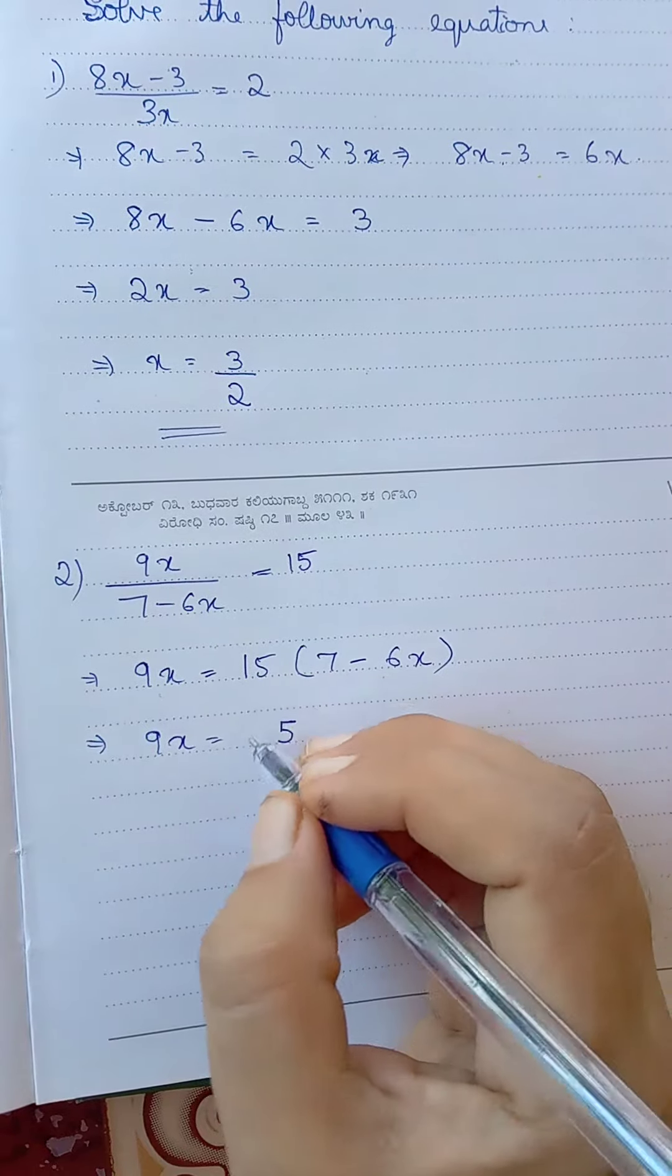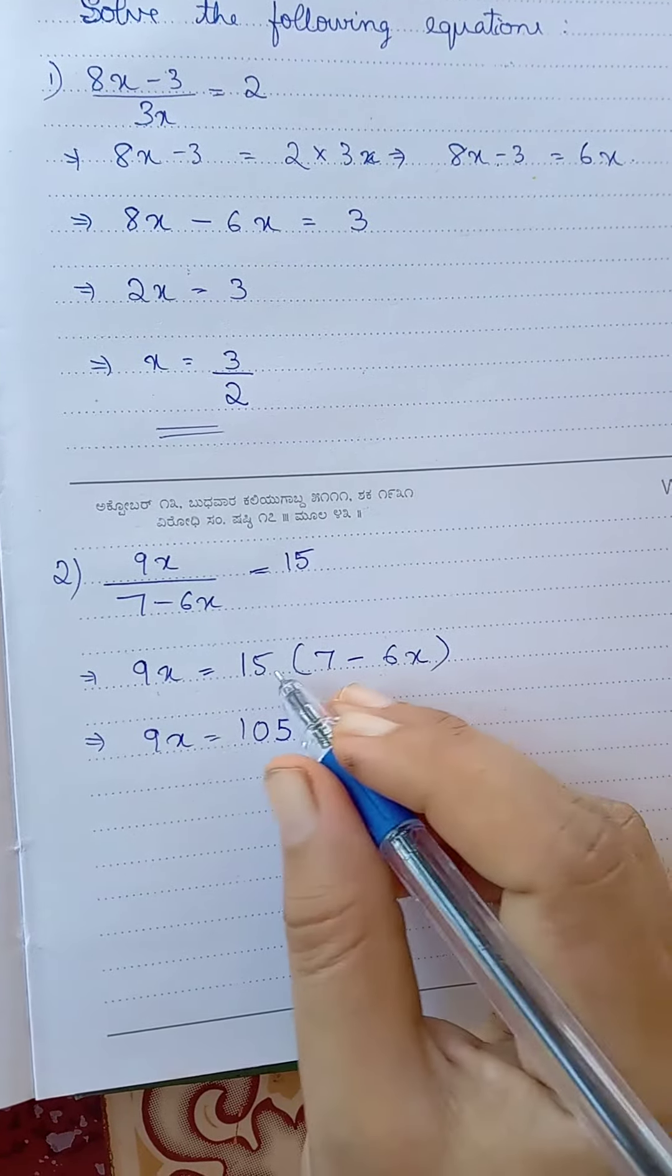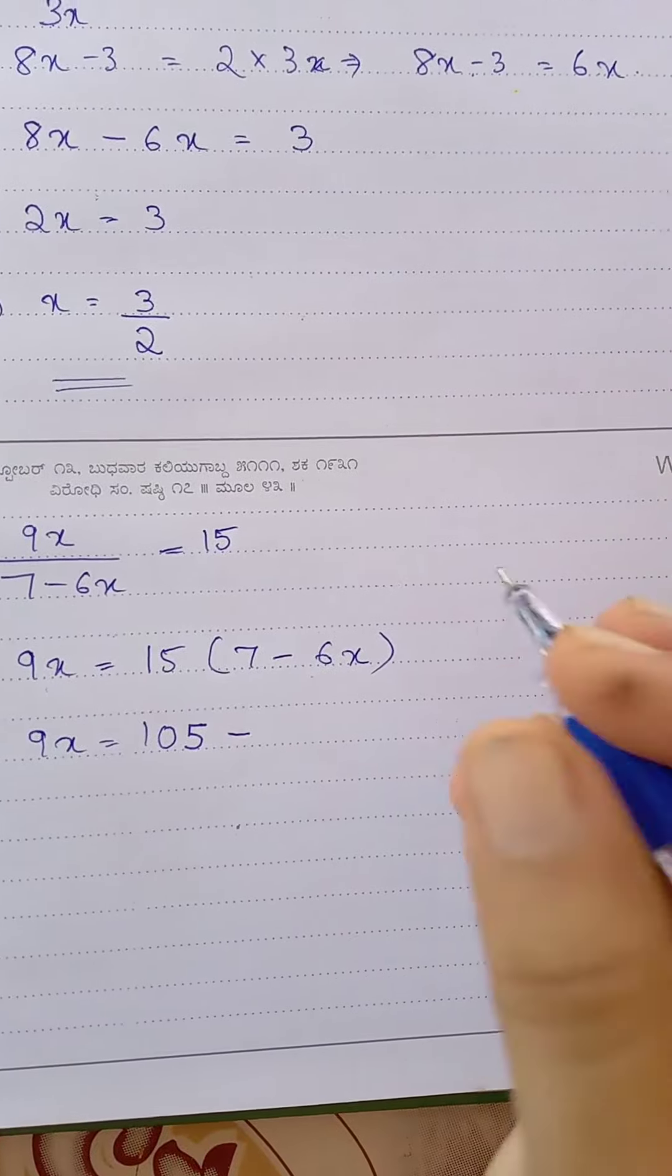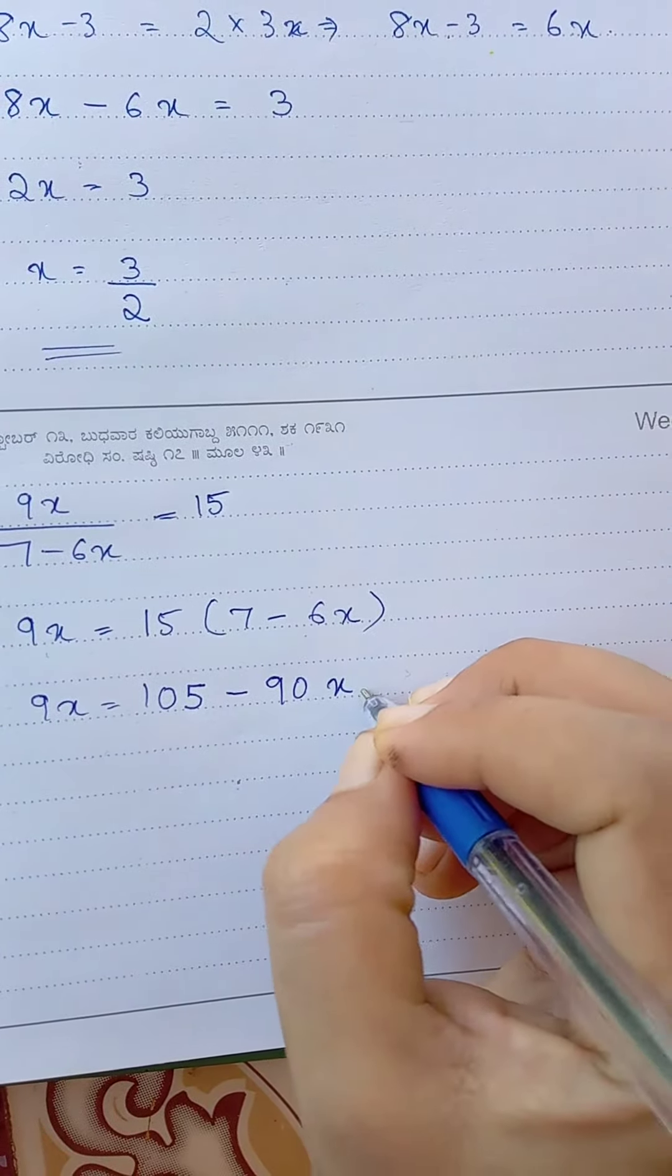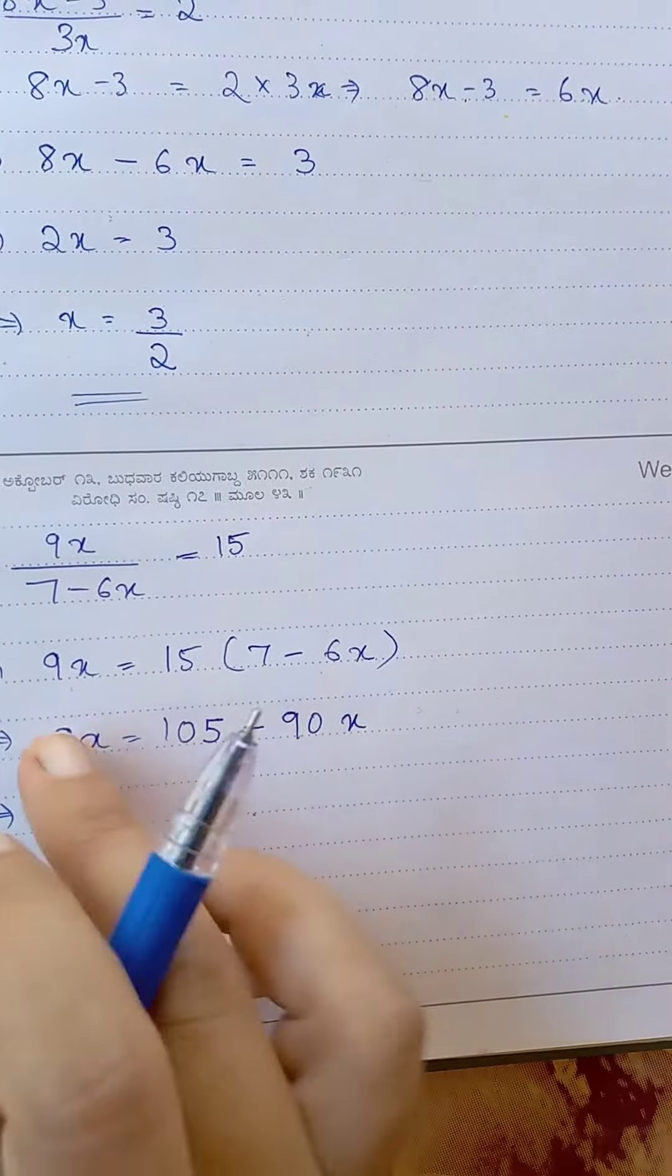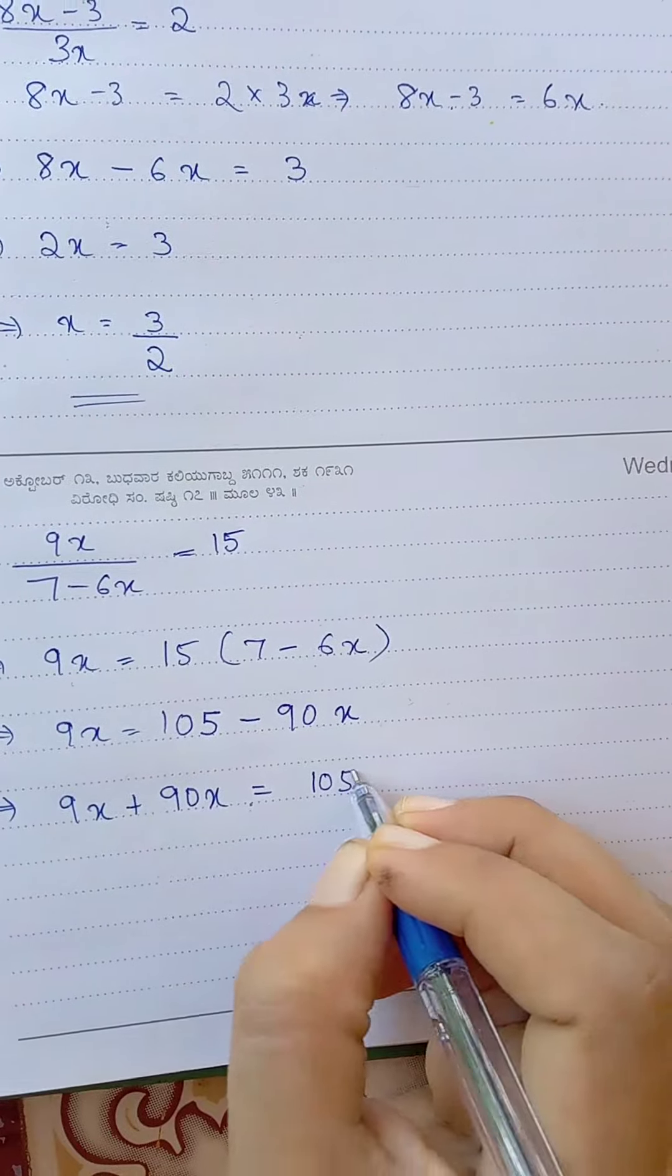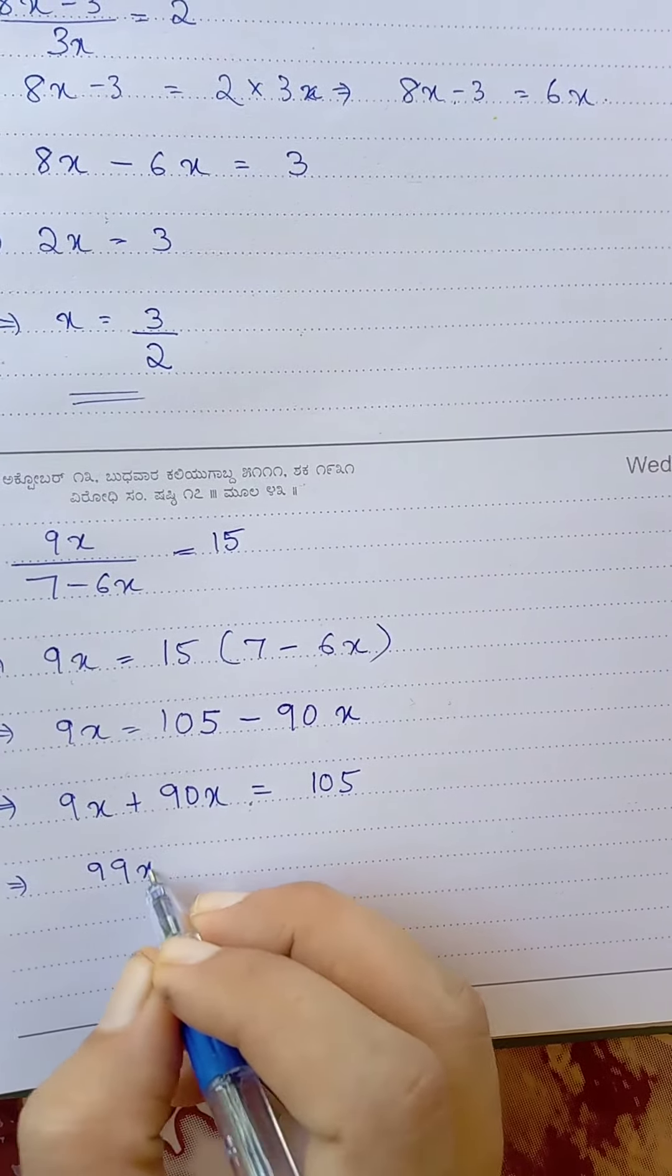15 times 7 is 105, so 105 minus 90x. You need to move 90x to the LHS: 9x plus 90x equal to 105, which implies 99x equal to 105.